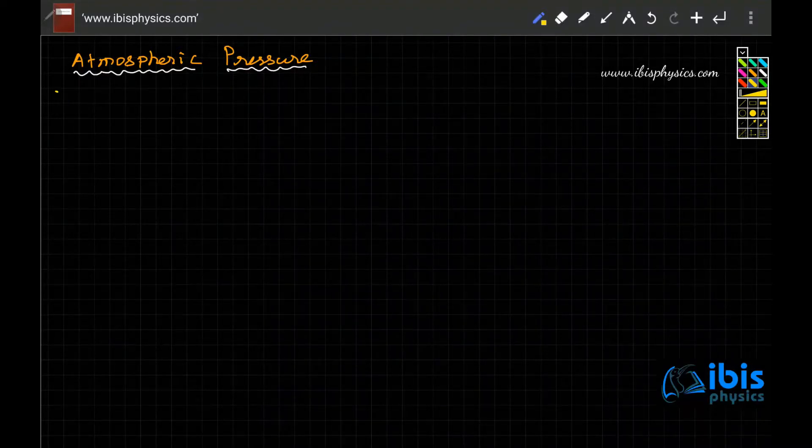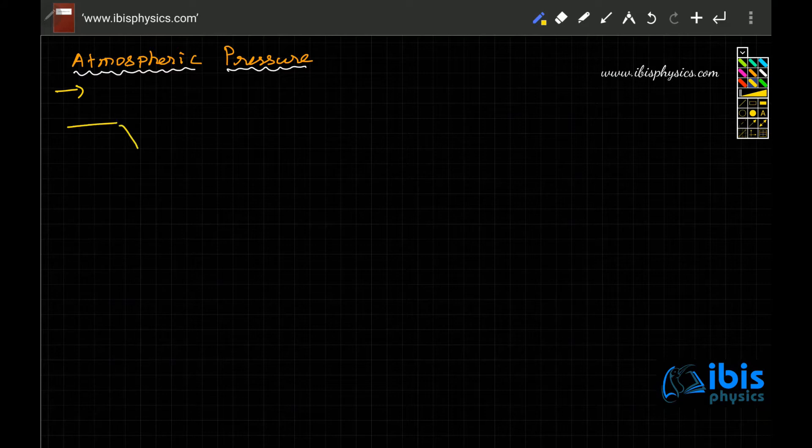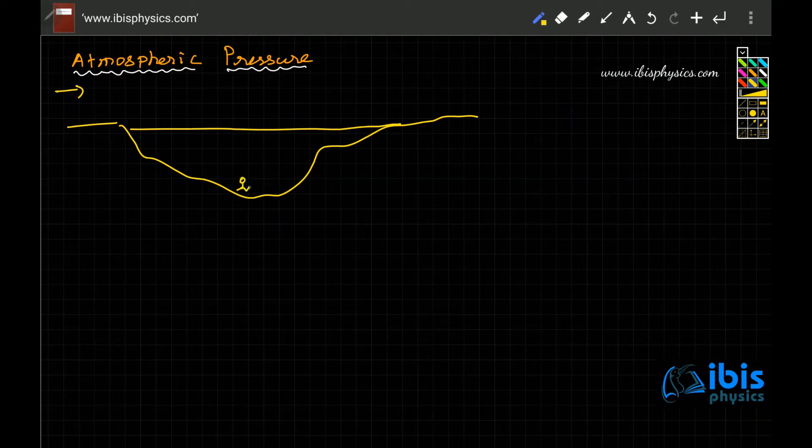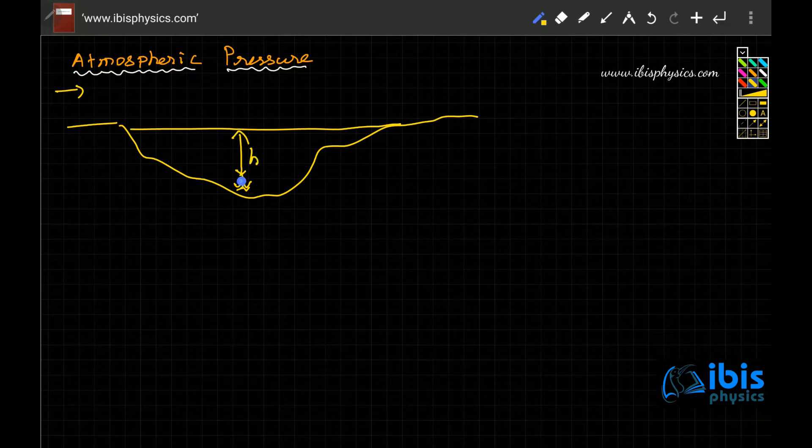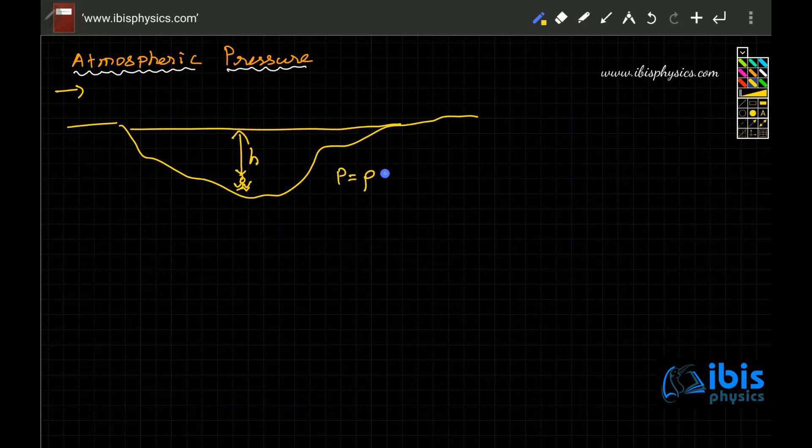Let us talk about atmospheric pressure. Yesterday we discussed that suppose this is a lake and water is there in this lake. If a person is here beneath the lake at a depth of h, on this person's head the pressure will be equal to density of the water in the lake, gravity, into depth - the water column's height.